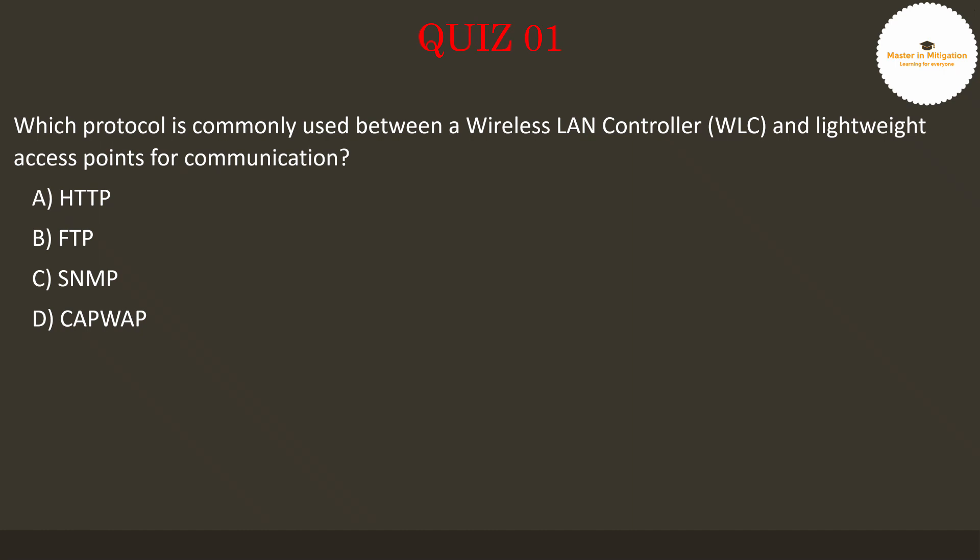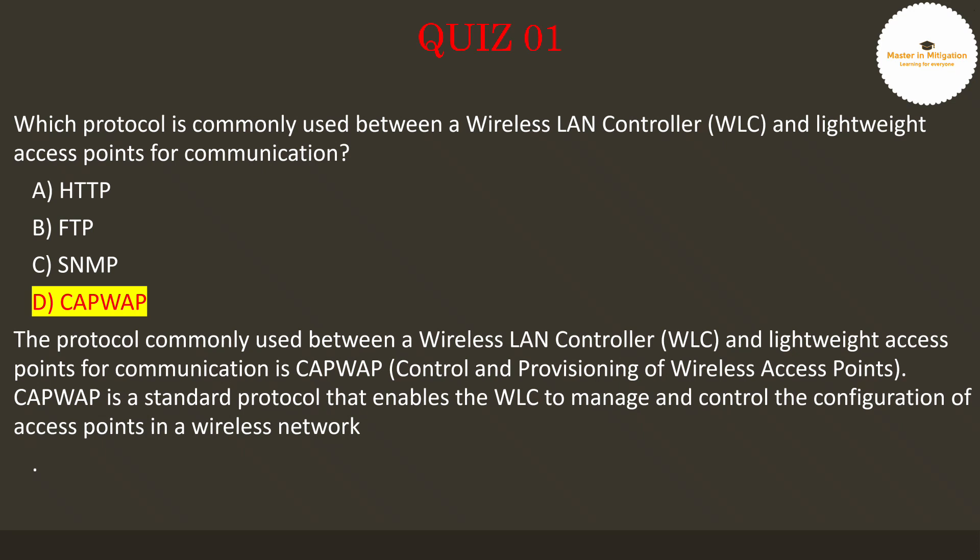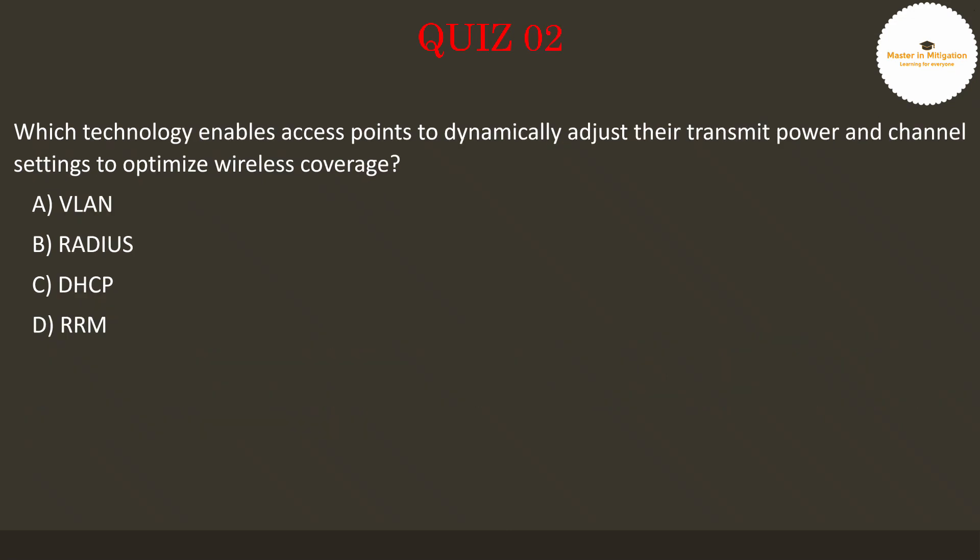The answer is D. CapWAP. The protocol commonly used between a wireless LAN controller, WLC, and lightweight access points for communication is CapWAP, Control and Provisioning of Wireless Access Points. CapWAP is a standard protocol that enables the WLC to manage and control the configuration of access points in a wireless network.